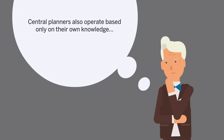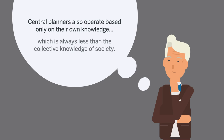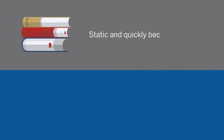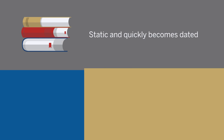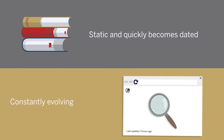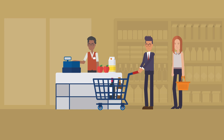Central planners also operate based only on their own knowledge, which is always less than the collective knowledge of society. Think of the difference between a published encyclopedia, which is static and quickly becomes dated, and a decentralized alternative, like Wikipedia, which is constantly evolving and growing. Markets also create a unique piece of knowledge: prices.